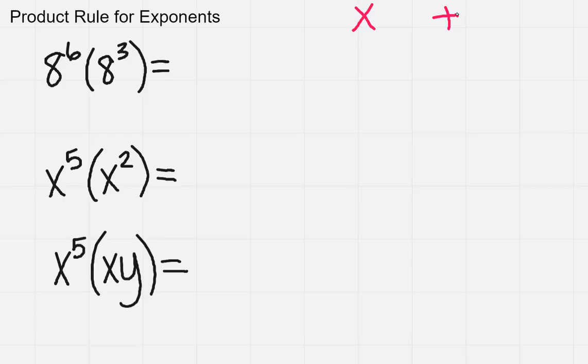So what happens when you're using the product rule and you're multiplying with exponents, as long as your base, which is the number, the big number, that's your base, if those are the same, you can just add your exponents.